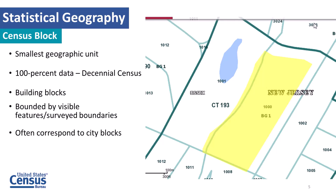Let's think about the census block. Here we have block 1000, with a river on the left and a railroad on the right. It is the smallest geographic area for which we present data — usually for the decennial census. These are the building blocks for everything. They are bounded by visible features or survey features and often correspond to city blocks.